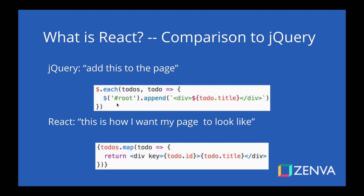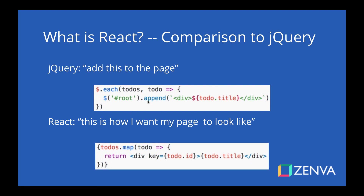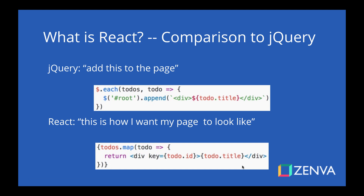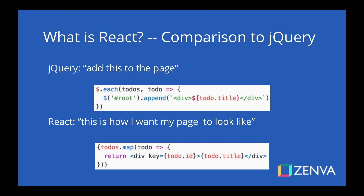For each to-do, you create a new div with the title of the to-do. That is what is known as imperative — because you're telling JavaScript, for every to-do in this list, put an additional div on the root element. With React, it's declarative. So rather than going through a list of to-dos and telling the DOM to update, you're actually just returning an array of to-do items. And based on the data that you give it, all it does is return a list of divs and React renders that for you. You don't have to worry about how it renders — you just tell it how you want it to look and it does it for you. That's the difference between imperative, which is jQuery, and declarative, which is React.